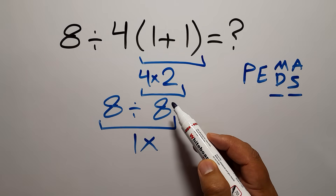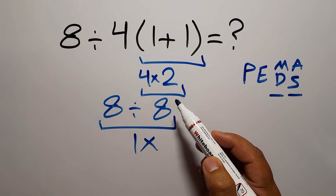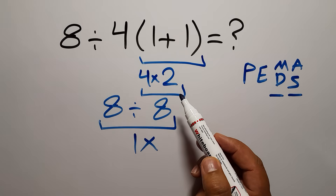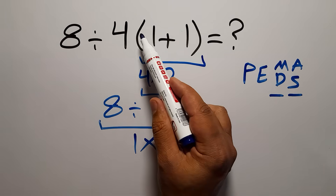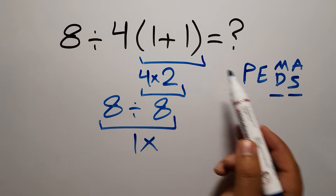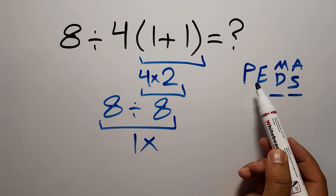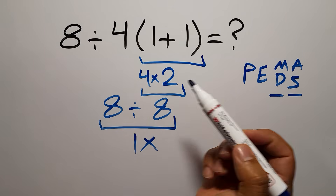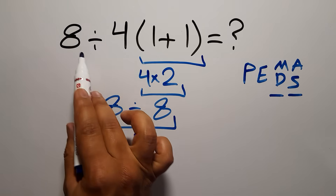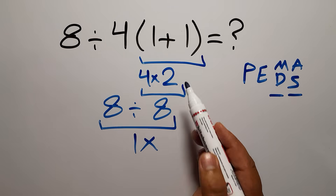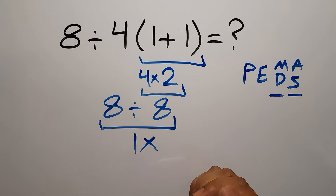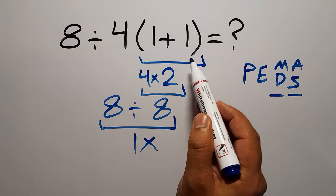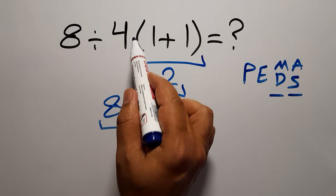In this expression we have one division, one multiplication, and one set of parentheses. In PEMDAS, parentheses come before multiplication and division, so first we have to do the parentheses, then the division, and finally the multiplication — because multiplication and division have equal priority and we work from left to right.